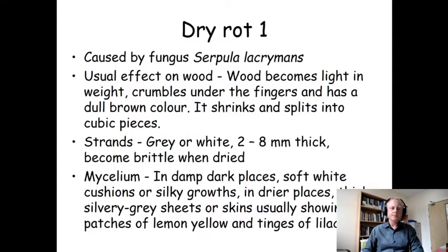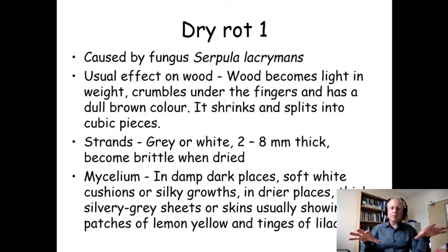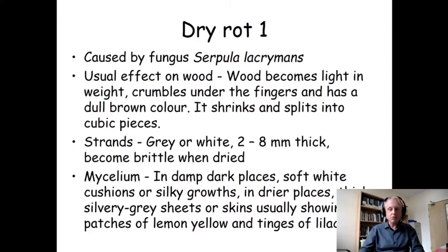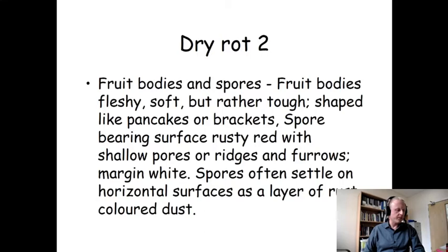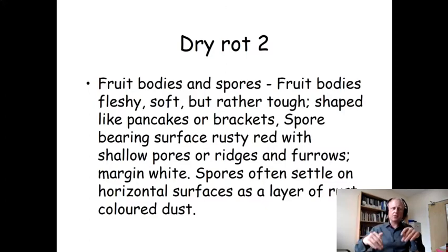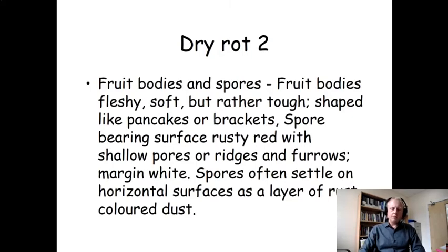The mycelium, where you get a mass of it, forms soft white cushions or silky growths in damp dark places, and silver-grey sheets in drier places. The skin usually has patches of lemon yellow or lilac, which makes it sound rather pretty. The fruit bodies and spores are quite tough and fleshy - often flat like a pancake shape, sticking out from the wood, the sort of thing you see with a lot of wet rots on trees. The spore-bearing surface goes rusty red as those spores are a rusty red colour, so you've got to look for the dust.